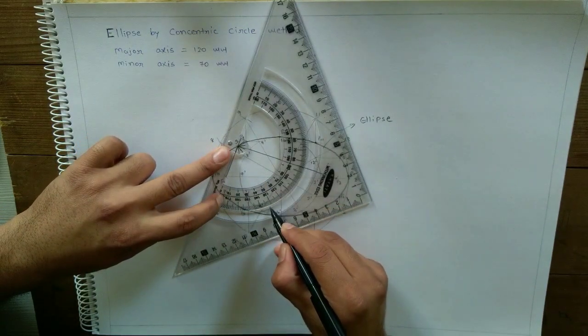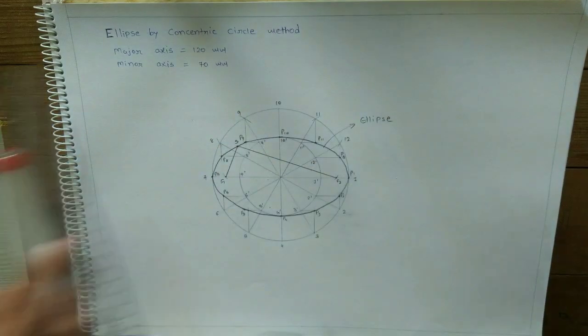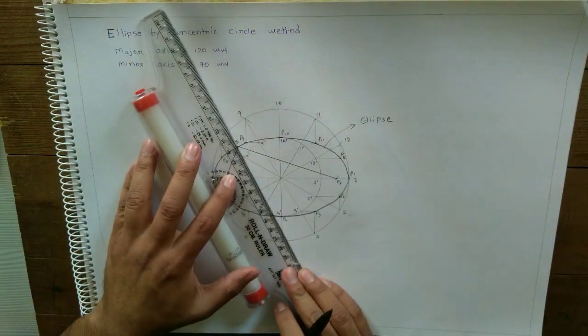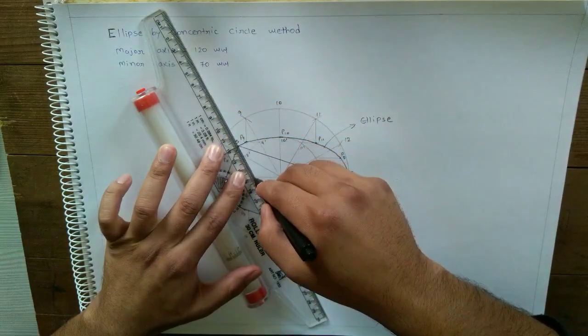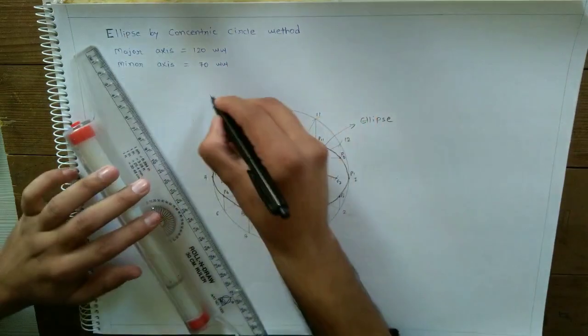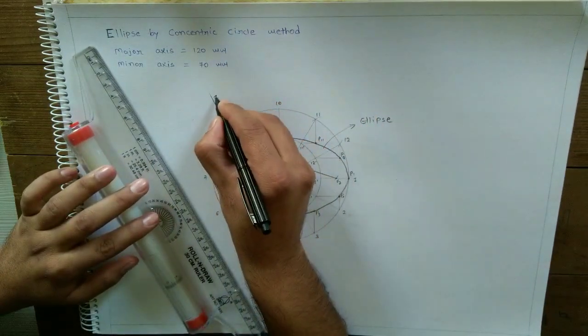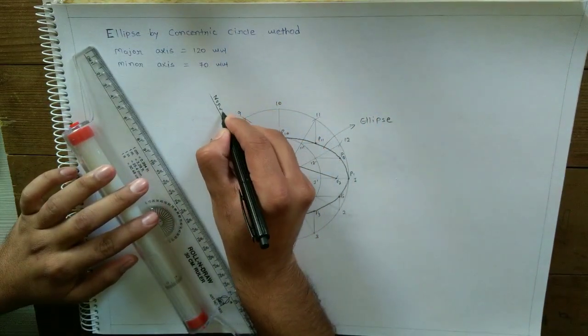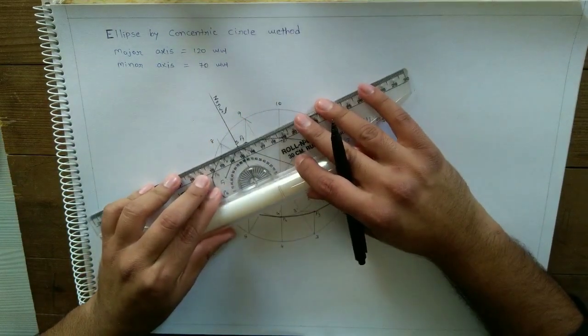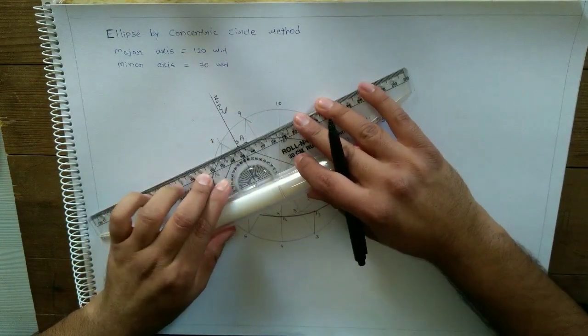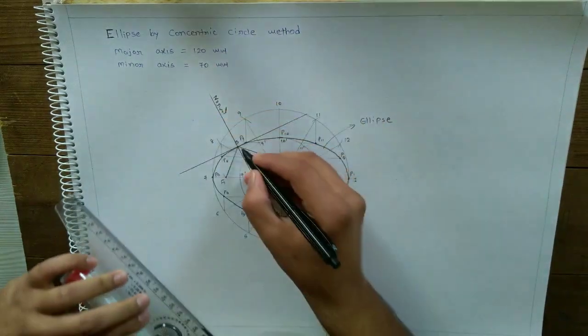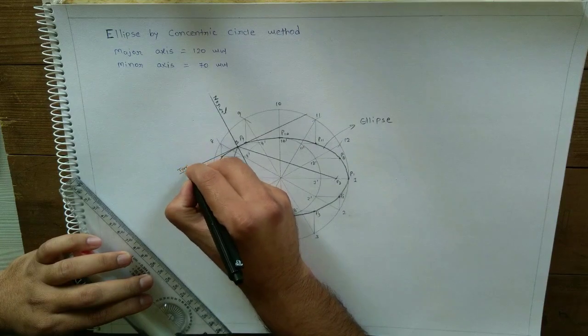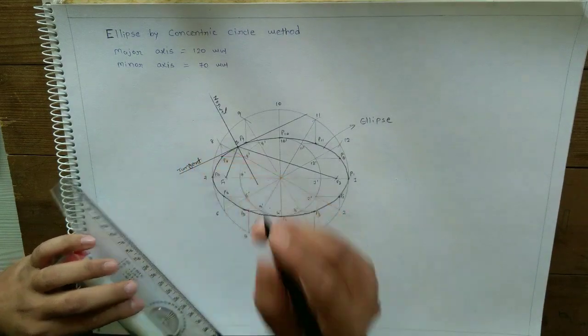Perpendicular to this line will show tangent to ellipse at point s, at the same point. Thank you.